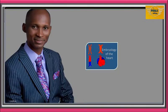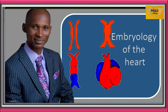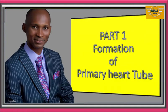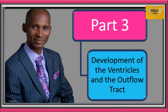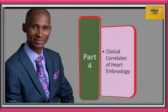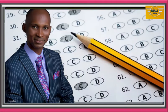This is a lecture series on the embryology of the heart. The lecture is divided into 5 parts. Part 1 is on the formation of the primary heart tube. Part 2 is on the development of the atrial chambers. Part 3, which you are watching now, is on the development of the ventricles and the outflow tract. Part 4 is on the clinical correlates of heart embryology, and in Part 5, we will test our knowledge through a question and answer section, answering related questions from various examination boards.